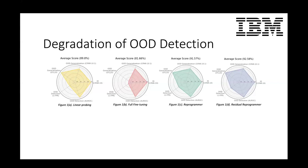Going back to our initial questions: does the degradation seen in prior work also extend to out-of-distribution detection — beyond covariance shifts into more extreme semantic shifts? The answer is yes. When you naively fine-tune a model that was pre-trained with very strong generalization capabilities, not only do you lose covariance-shifted generalizable information, but you also lose all other information that is not in distribution. Full fine-tuning in particular, which Percy's group showed was detrimental, similarly hurts semantically shifted OOD samples.